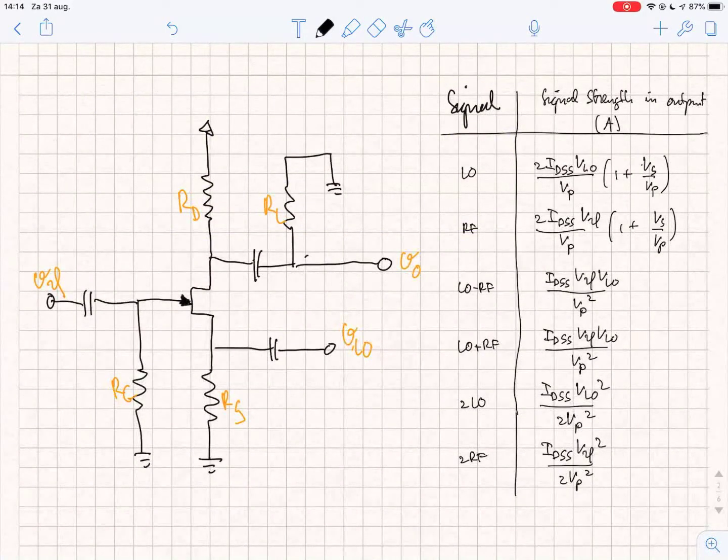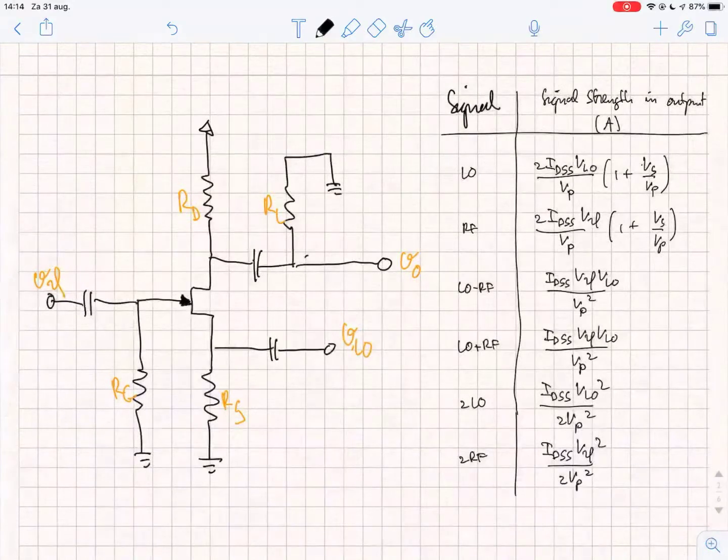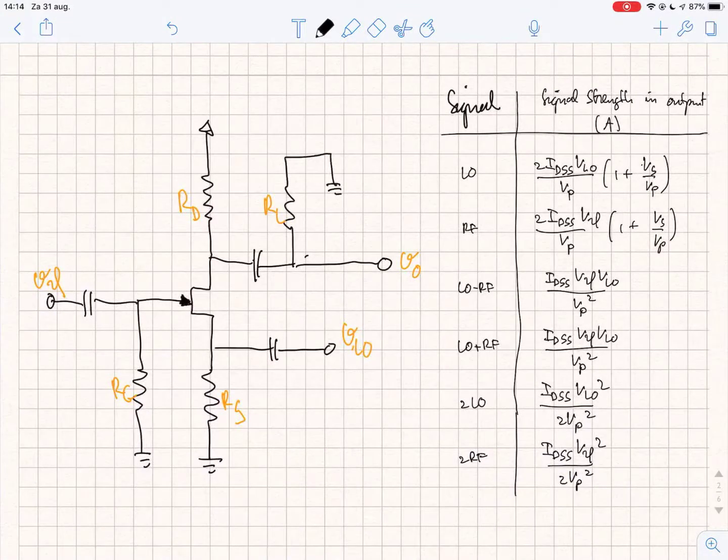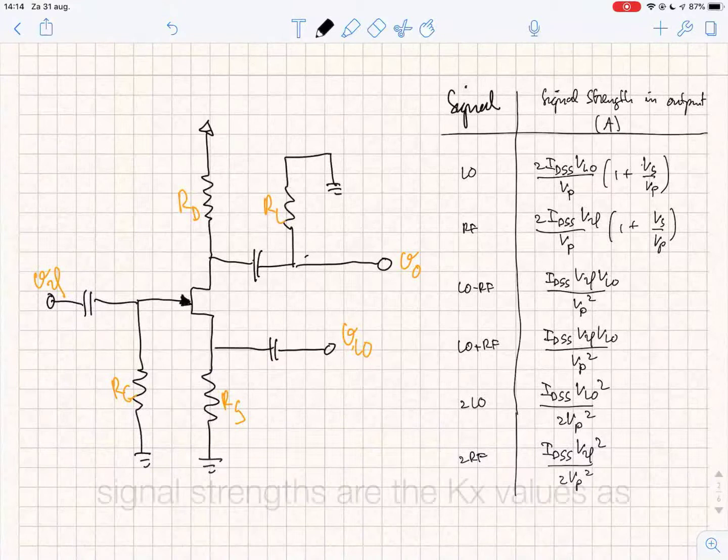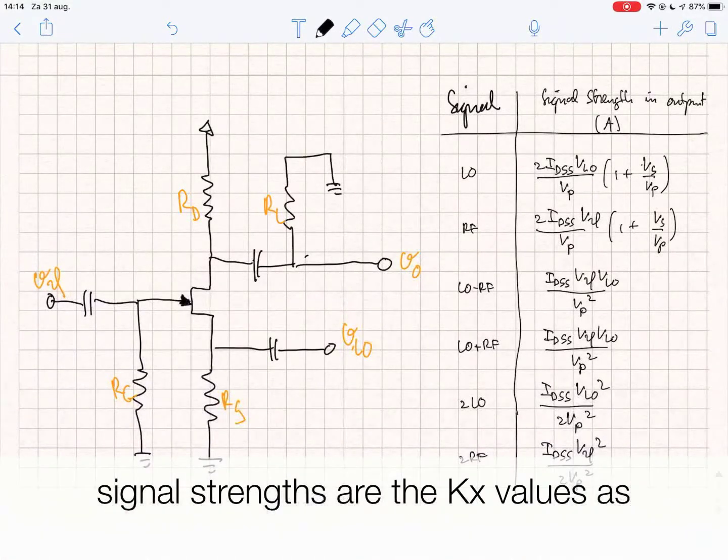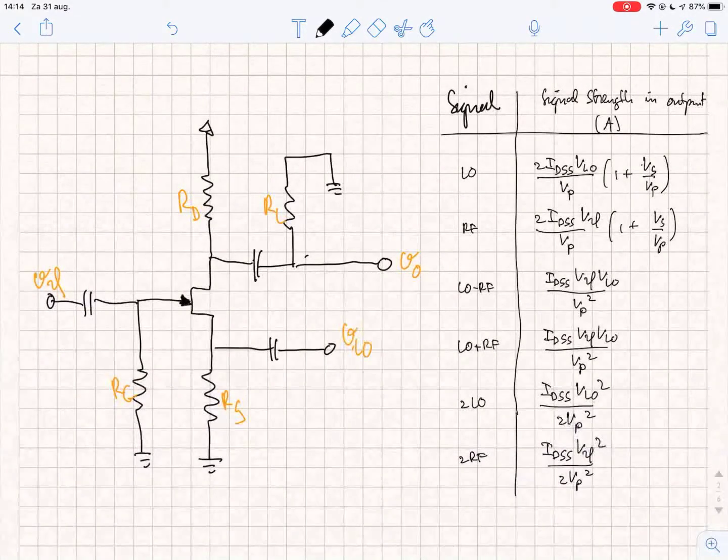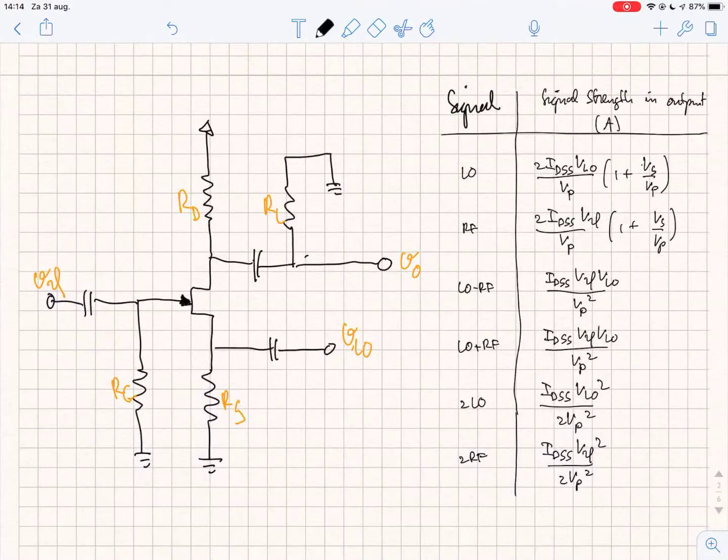Okay, this is the circuit diagram for the JFET mixer which I use to measure the performance. On the right we see the table which gives for every frequency in the output the signal strength, which is a current in this case. When you measure the voltage you will have to take the load into account, as we will see later.